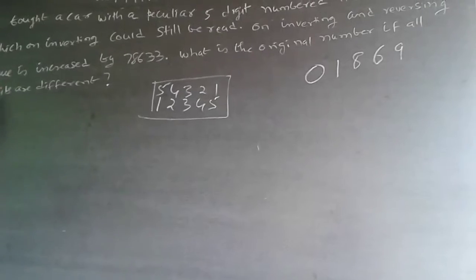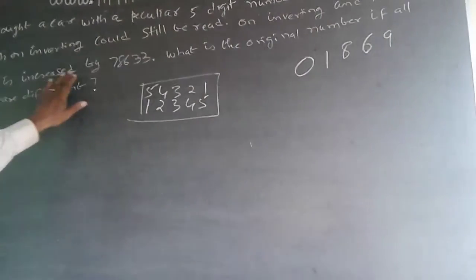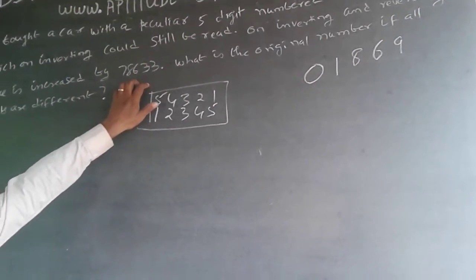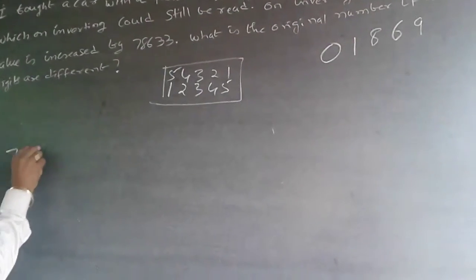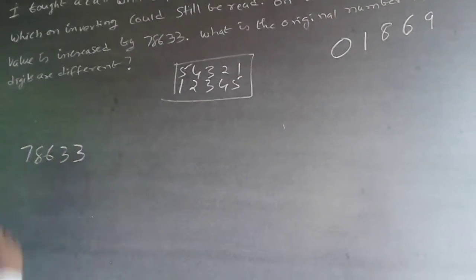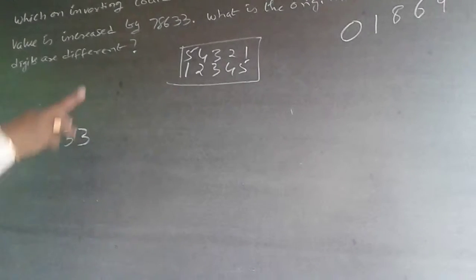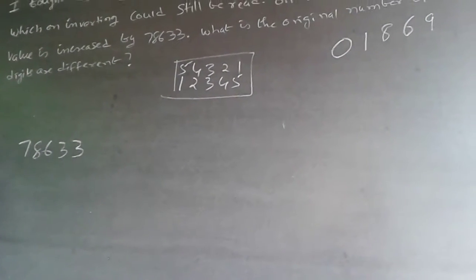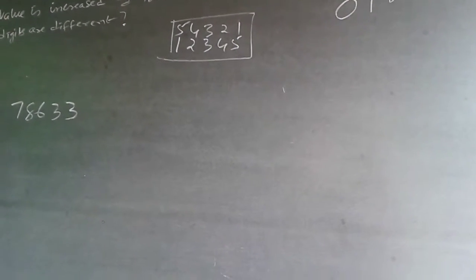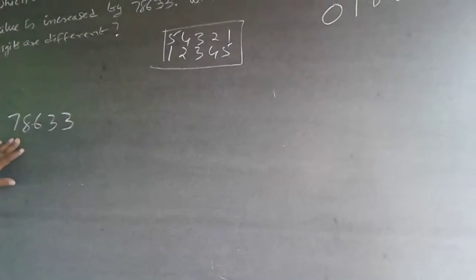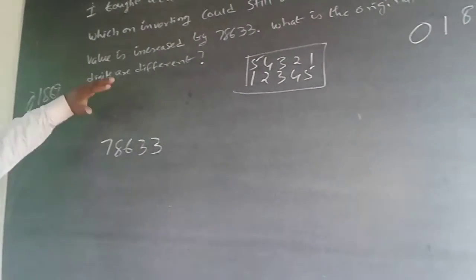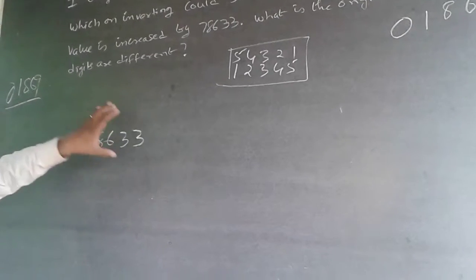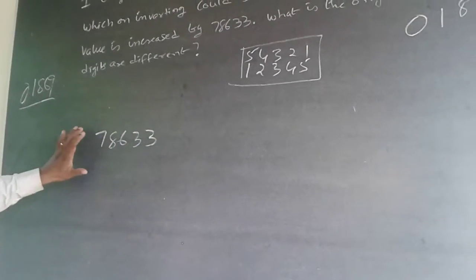So what happens when the car number is inverted and reversed, the value is increasing by 78633. So it is increasing by 78633. The numbers that I can use are 0, 1, 8, 6, and 9. So from these numbers, because this is a minus problem, it is increased means bigger number minus smaller number, it is 78633.